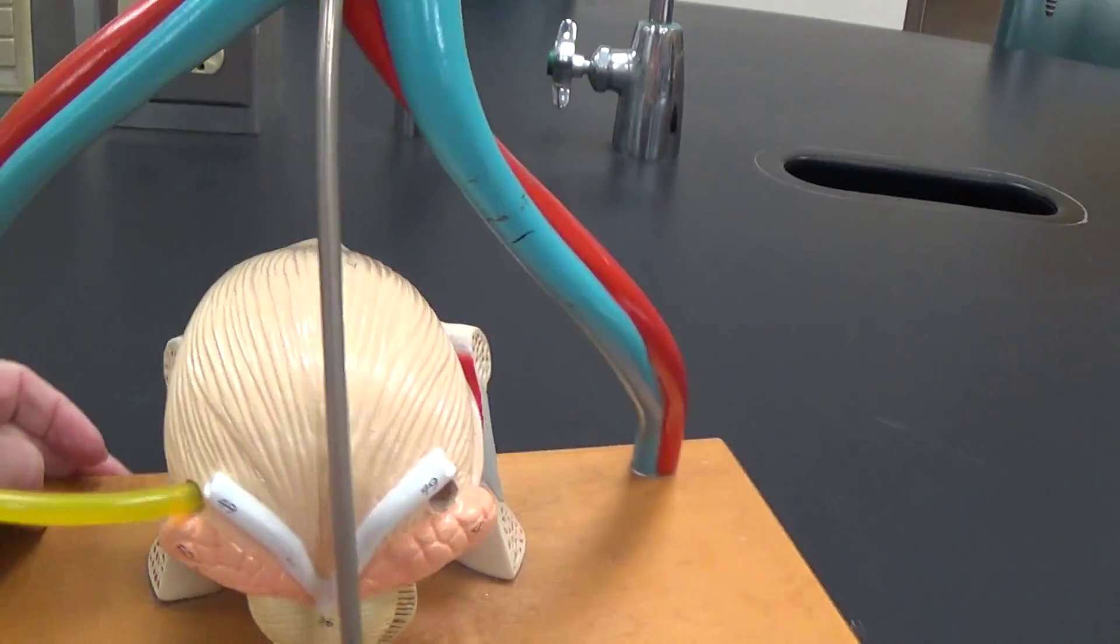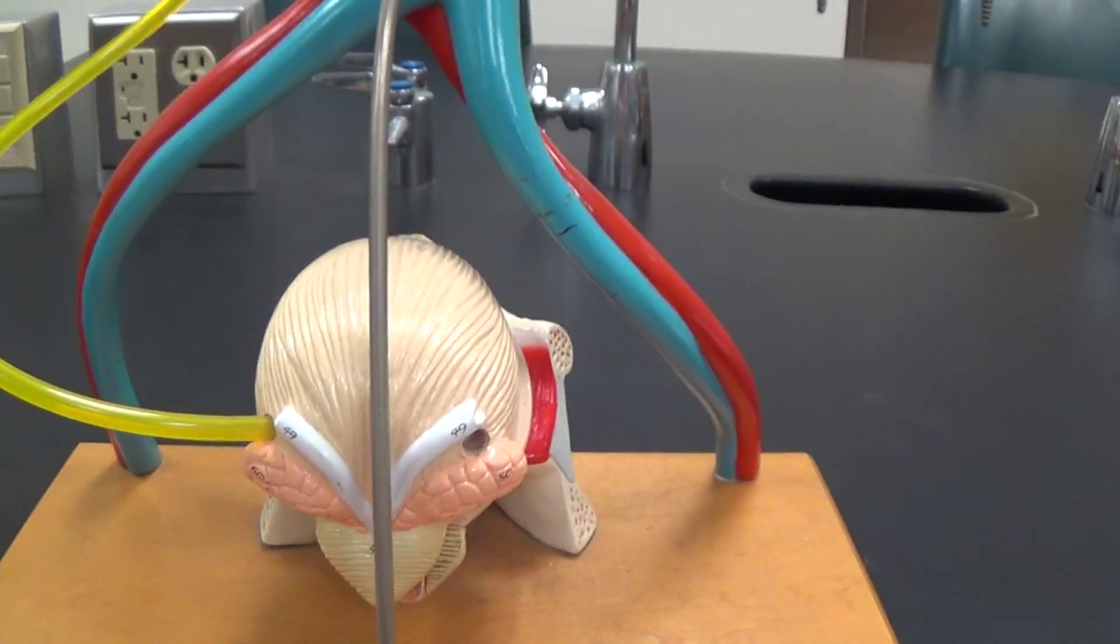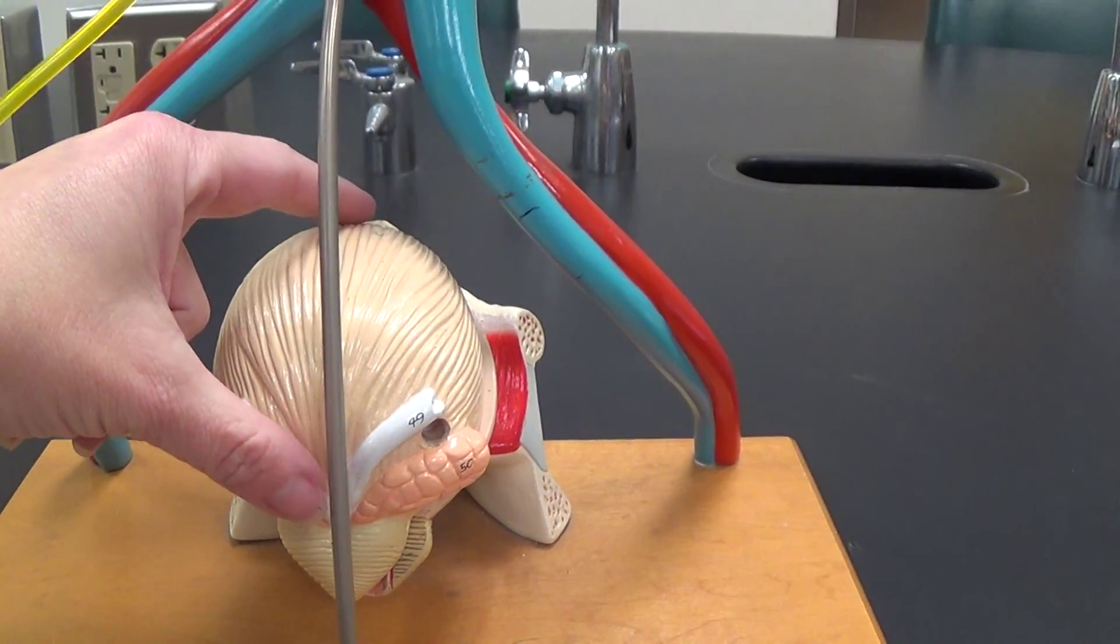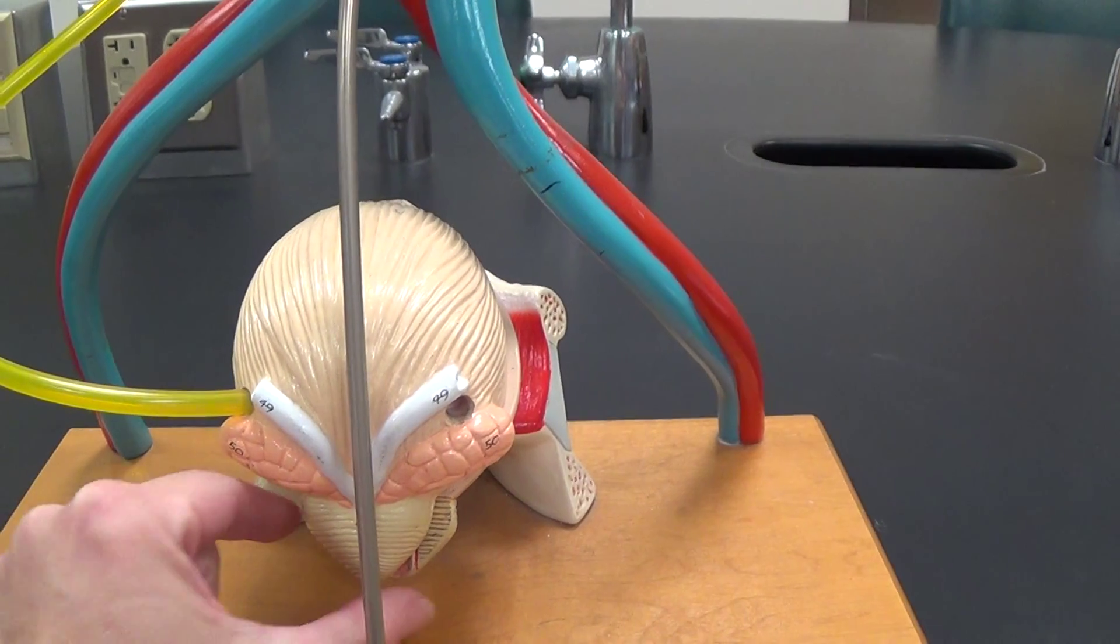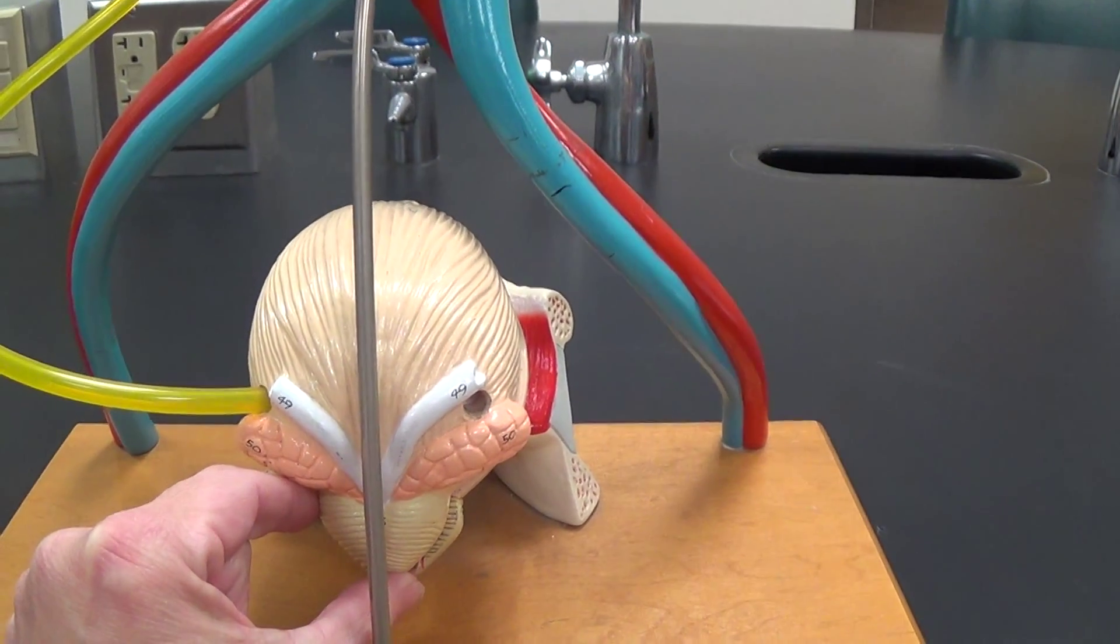Now, when we turn this around, we're now looking at the posterior side. This is the bladder. Down here, this is a male model, and this beak-like structure that we see is the prostate.